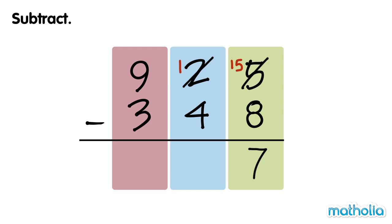Next, we subtract the tens. We cannot subtract 4 tens from 1 ten, so we regroup 1 hundred into 10 tens. Now we have 8 hundreds and 11 tens. Now we can subtract the tens: 11 tens minus 4 tens equals 7 tens.